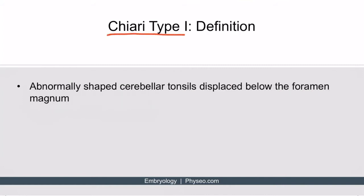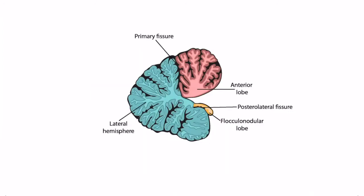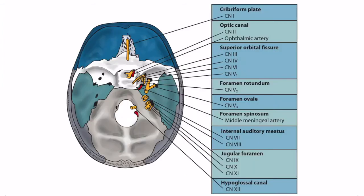Chiari type one is defined as having abnormally shaped cerebellar tonsils which are displaced below the foramen magnum. This image shows the adult brain, and down here is the cerebellum. If we take a sagittal cut of the cerebellum, we can get an image like this. The cerebellar structures are discussed in detail within the neurology physiology portion of this chapter — right now, just focus on the inferior part: the cerebellar tonsil.